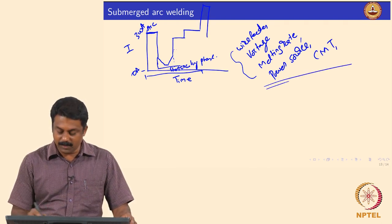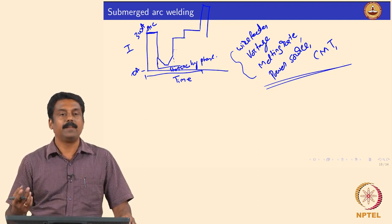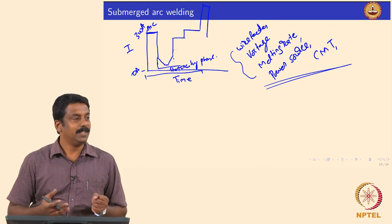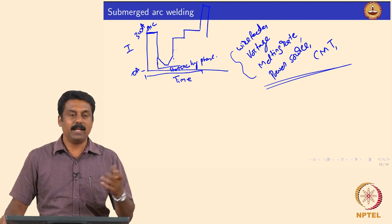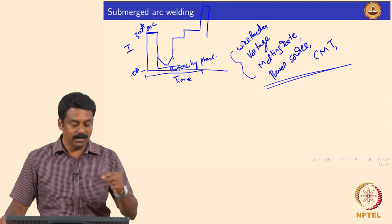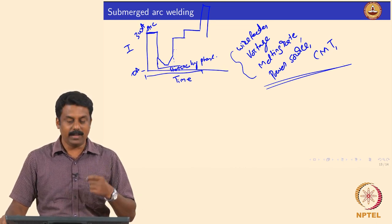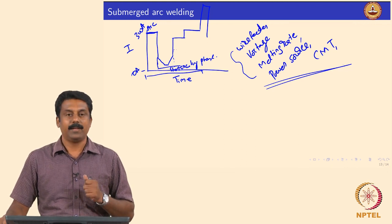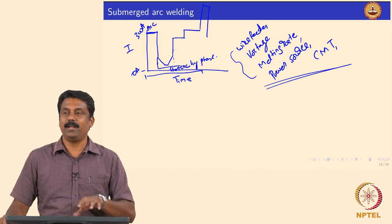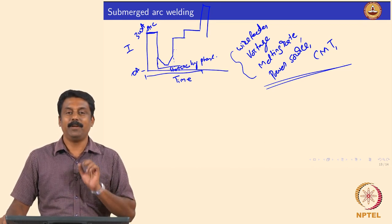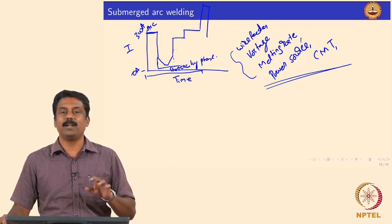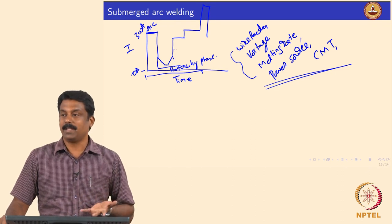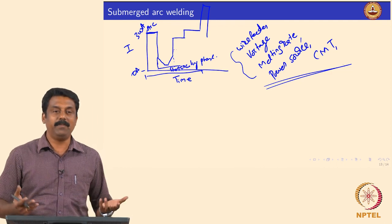These advantages are all possible because of advancements in the understanding of the physics of the welding process. Once you know what is going on during welding, you can play around with parameters. The moral of this lesson is: understand the physics so that we invent new things. It is not about repeating what someone else did — you try to understand the physics of the process, and then you can invent new methodologies and new processes which are ultimately beneficial for various applications.